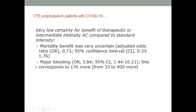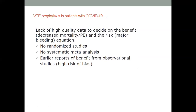Major bleeding odds ratio for higher intensity anticoagulation was close to four — this is established. The weak suggestion favoring standard prophylactic dose was based on a lack of high-quality data to resolve the benefit of decreased mortality and PE versus the risk of major bleeding. More randomized trials were needed, as earlier reports of benefit came only from observational studies at high risk of bias.